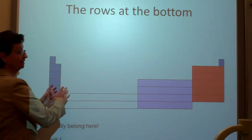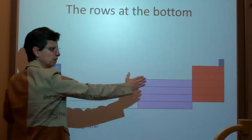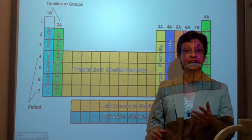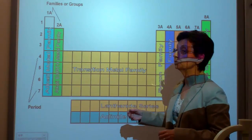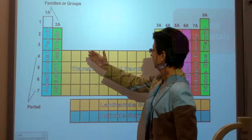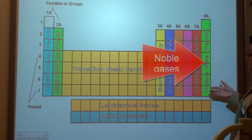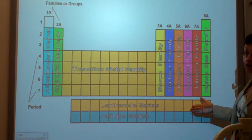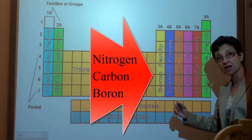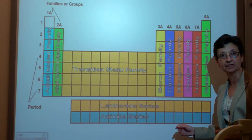So now I want to tell you a little bit about the families, or groups. Over here are the alkali metals. Here are the alkaline earth metals. The transition metals are right over here. Way over here are the noble gases. The halogens. The oxygen family. Nitrogen family. Carbon family. And boron family. You may want to pause and take out a periodic table, or print one out, and write down the names of the families so that you have them.